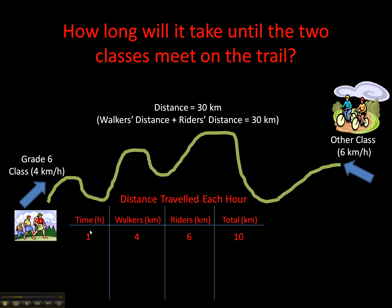At one hour, the walkers can walk 4 km every hour, and the riders can ride 6 km every hour, so the total is 4 plus 6 — in other words, 10 km. The grade 6 walkers will be somewhere along here, and the bikers will be somewhere along here. They haven't met up yet because they've only traveled 10 km total, meaning they have about 20 more kilometers to go.